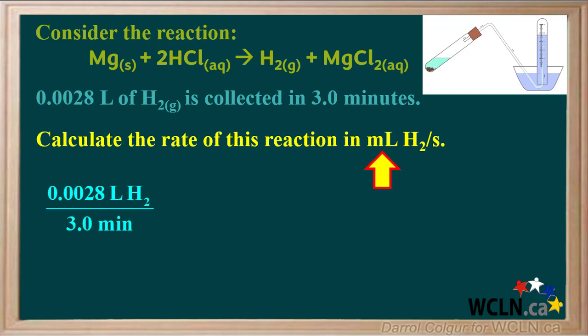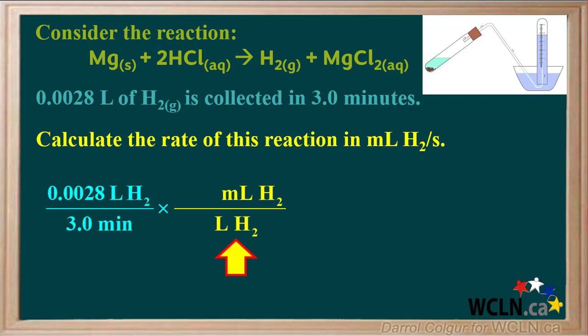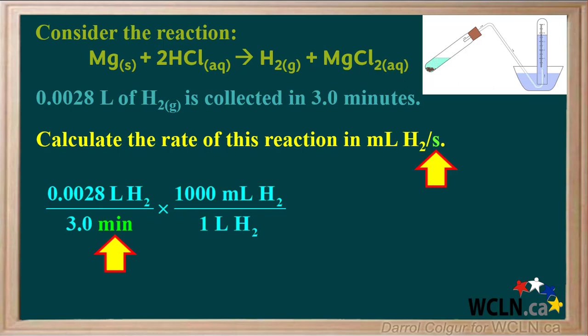But we're asked for the rate in milliliters of hydrogen per second, so we need to convert liters of hydrogen to milliliters of hydrogen. We can do this by multiplying by a conversion factor with milliliters of hydrogen on top and liters of hydrogen on the bottom. The liters of hydrogen will cancel and we'll be left with milliliters of hydrogen. We know that one liter of any gas is the same as one thousand milliliters, so with this conversion factor we can change liters of hydrogen to milliliters of hydrogen.